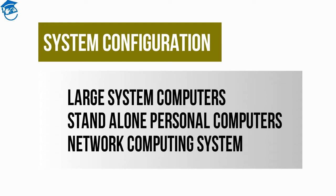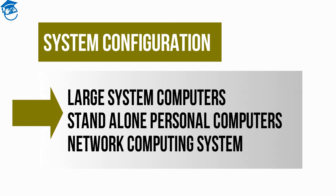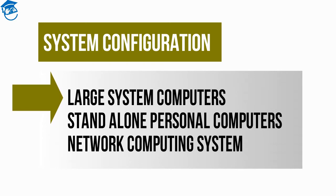Then comes the second one: standalone personal computers. These cater to the needs of a person who will not be having that kind of high-scale requirement. And finally, the third one is a network computing system — how this particular network works and how computing is done. In large system computers, the processing task of multiple users is performed on a single centralized computer.